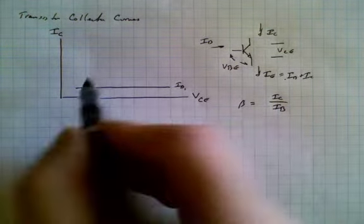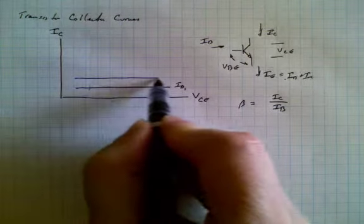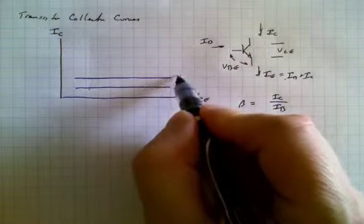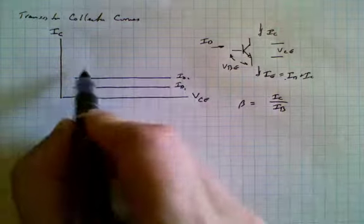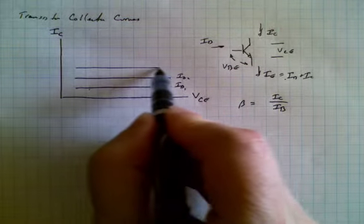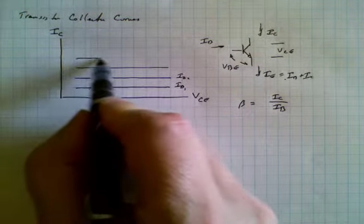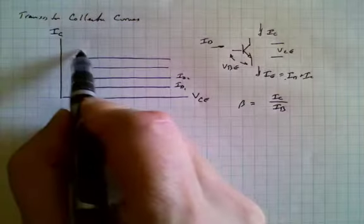And if we increase IB, we would get another curve which would look like this. This would be an ideal transistor. And likewise we get another curve that looks like this, and another one, and another one.